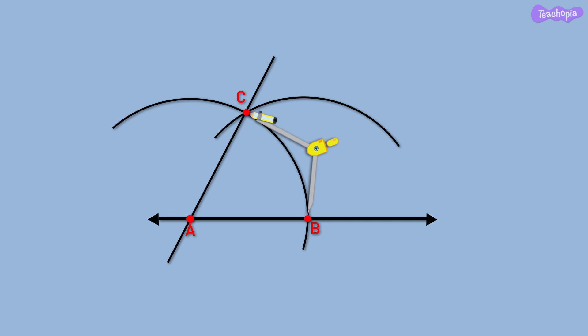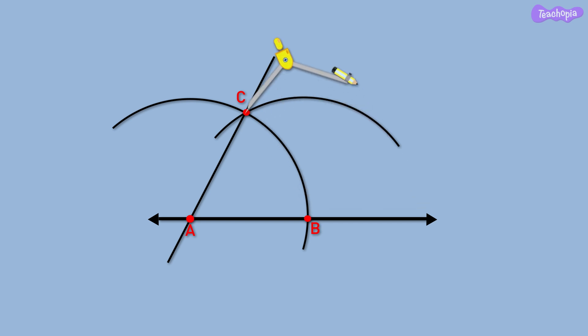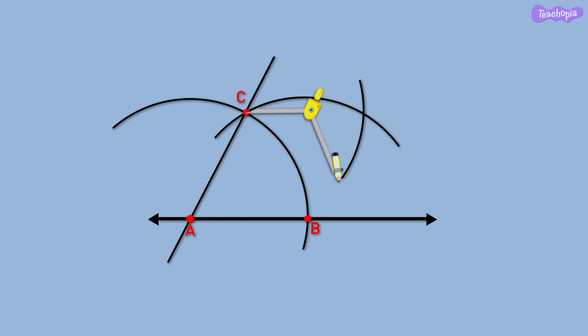Keeping the opening of the compass equal to AB, place the pointer at point C and swing it to draw an arc which cuts the arc drawn previously as shown. The point of intersection of the arcs is point D.